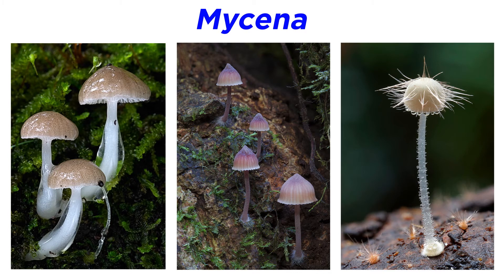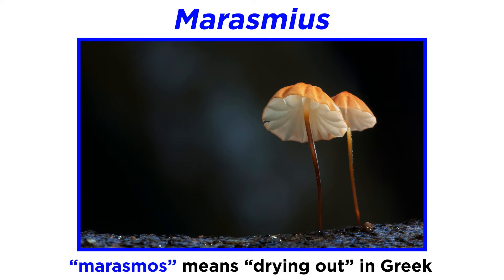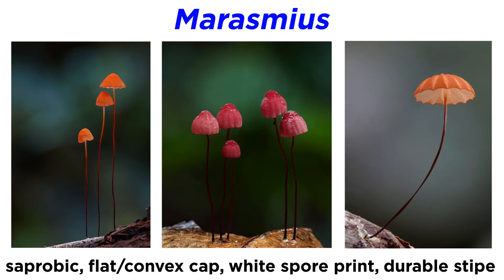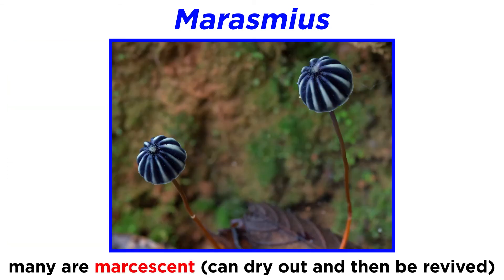There are many other interesting Mycena species, so keep your eyes peeled for these small but grand discoveries. We will now discuss another small in size but captivating genus called Marasmius. Marasmius originates from the Greek word myrasmos, meaning drying out. These saprobic mushrooms have a flat to somewhat convex cap, gills that produce a white spore print, and a durable central stipe. As the mushroom dries, the caps shrivel up, leaving a thin dark stipe sticking out of leaf litter.